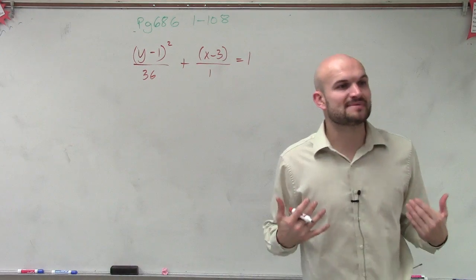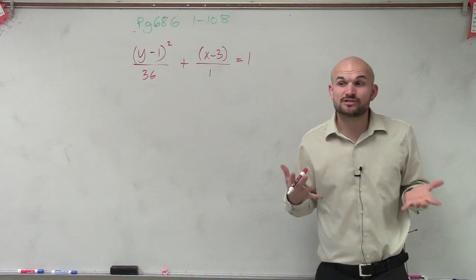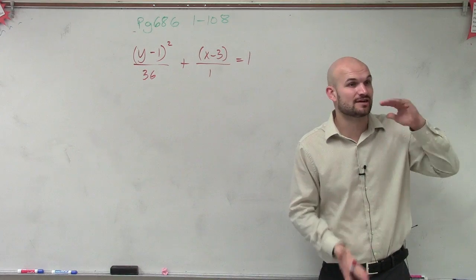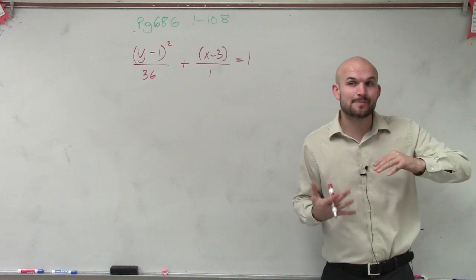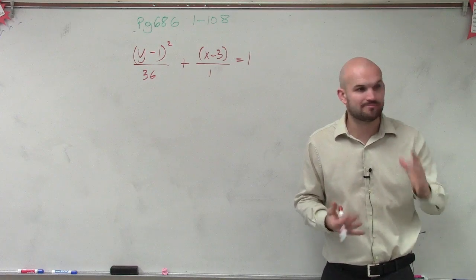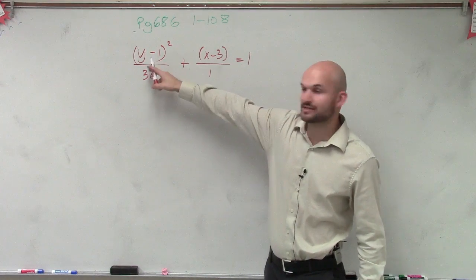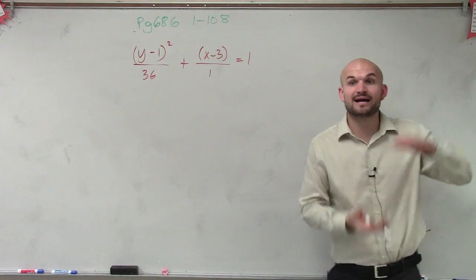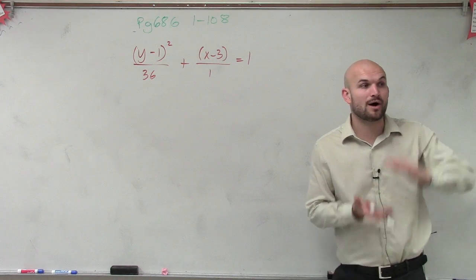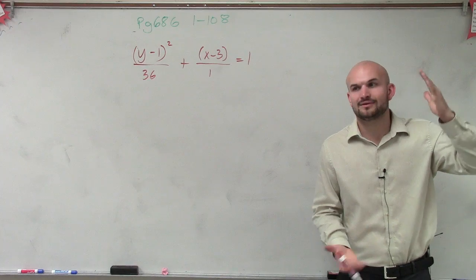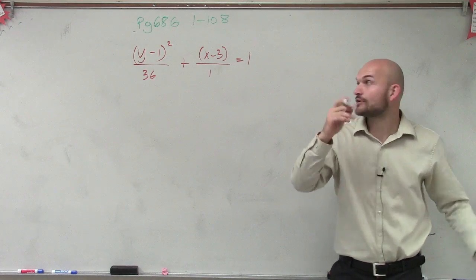Remember when dealing with an ellipse, Ava, A is going to be your larger number because A is your distance of your major axis. So an ellipse, A is always going to be larger than B. So we can determine that my A squared is under my Y, right? So automatically I know since my major axis is under my Y, I'm going to have a vertical ellipse again, right? Again, another vertical ellipse.